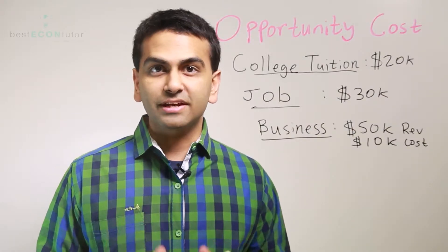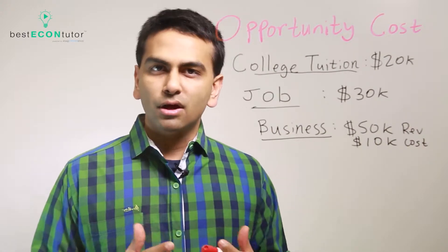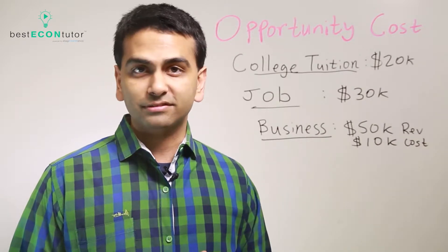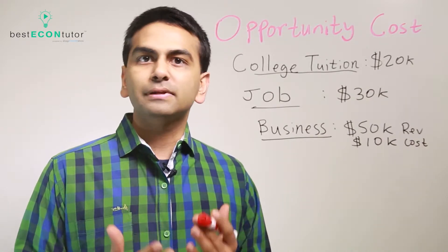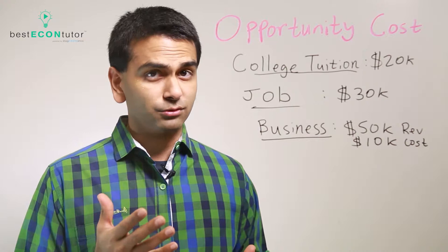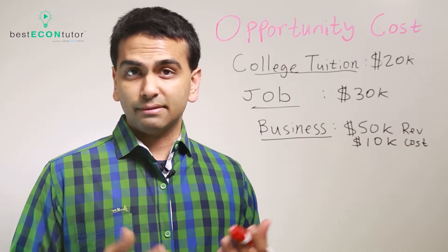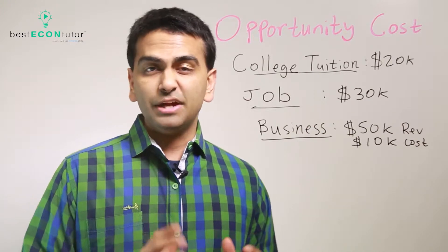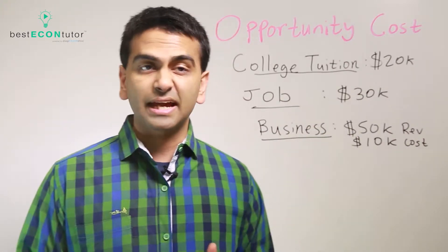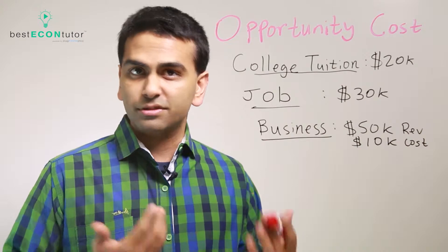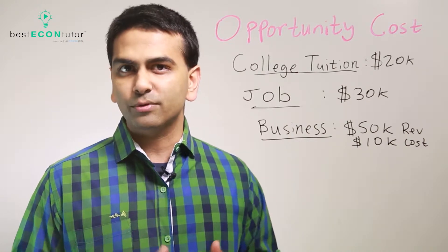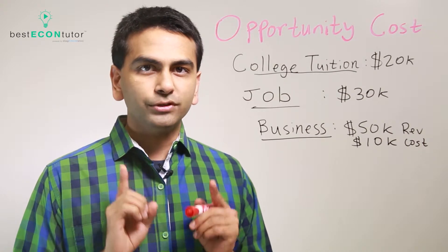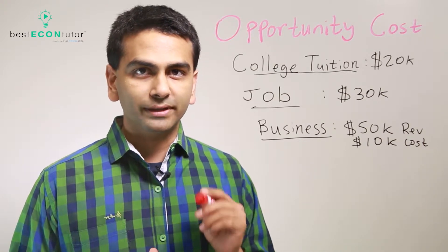The first thing is opportunity cost. What if you have an option to go to college where the tuition is $20,000, but you have a couple of alternatives? You could instead go to college and have a job that pays you $30,000, or instead start your own business where you'd get $50,000 expected revenues with a $10,000 cost of operating. So what is your opportunity cost of going to college?